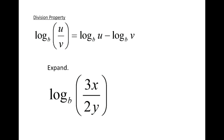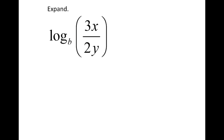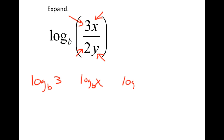Now let's take a look at the division property. Basically, if I have a single log of two items divided, I can split it into two logs subtracted, where the top item gets a positive log and the bottom item gets a negative log. For example, with log base b of 3x over 2y, I have four different items — each one gets its own log: log base b of 3, log base b of x, log base b of 2, and log base b of y. The 3 and the x are on top so they get positive logs; the 2 and the y are in the denominator so they each get a negative log.